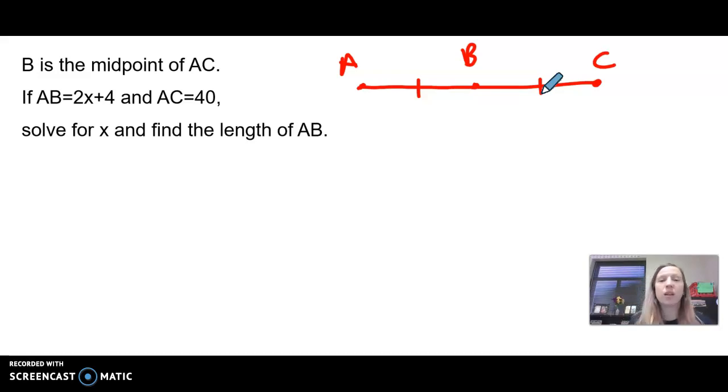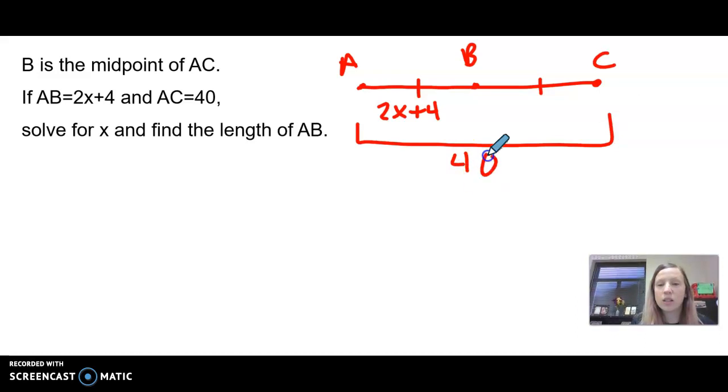If AB is 2x plus 4, and AC, the entire thing, is 40 units, solve for x and find the length of AB. So those are the only two things we know. But if we know that B is the midpoint, then that means this side, BC, must also be 2x plus 4. If it's the midpoint, then these two are the same length. AB and BC are the same length.